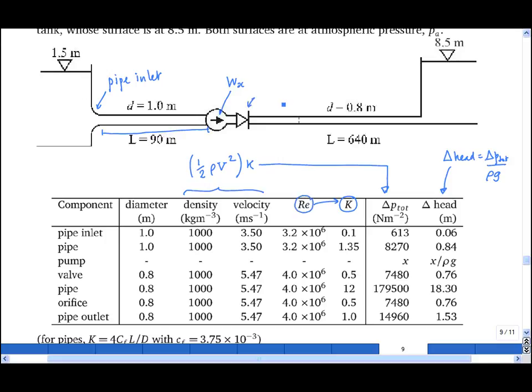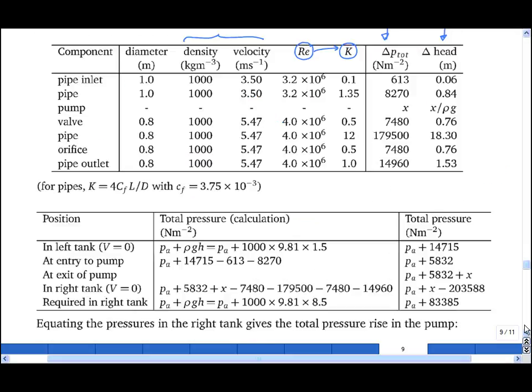Then we have the valve, then we have another pipe, we have an orifice, and then we have an exit loss. And now we can follow the total pressure through the network.